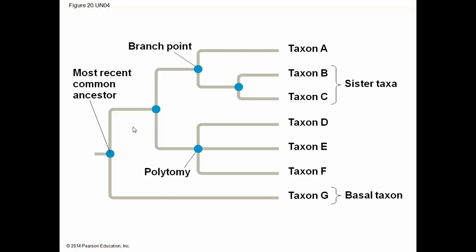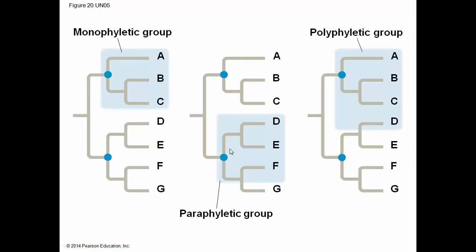Here's the tree to review. The phylogenetic tree shows the most recent common ancestor. These are the branch points — the common recent ancestors. There's the polytomy — these are unresolved taxa. Monophyletic groups, paraphyletic groups, polyphyletic groups: the most important is the monophyletic group, because that is the basis of the clade. The clade is used to describe all those organisms that are related by common ancestry.